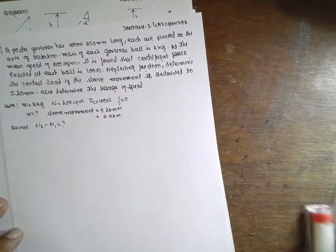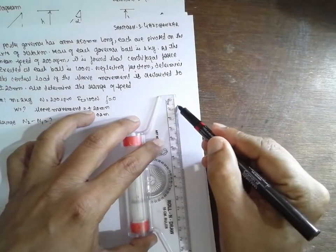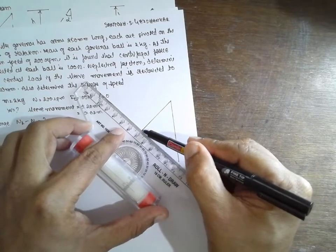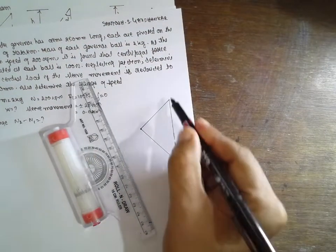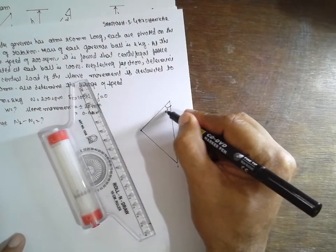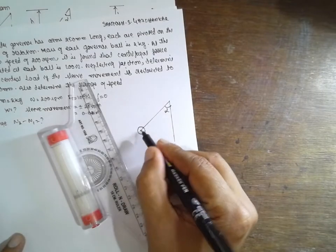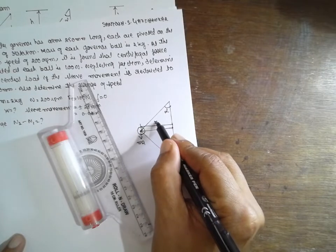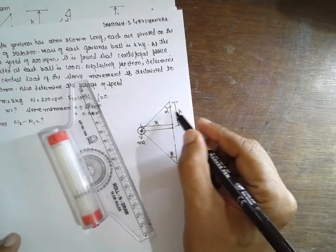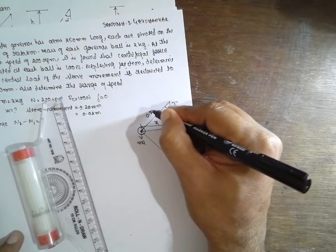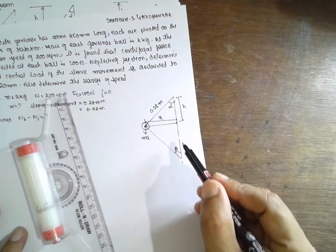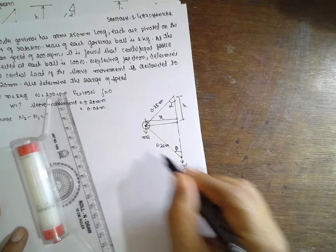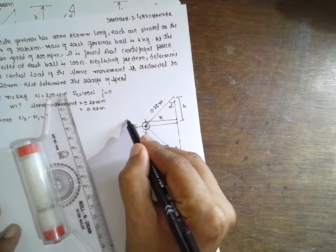First draw the diagram. In the diagram, they did not mention the distance from the bottom end from the axis, so we have to assume that alpha is equal to beta. The arm length is 0.25 meter. This is also 0.25 meter. We have W/2 for the sleeve load and w/2 for the ball weight. The centrifugal force Fc is given.